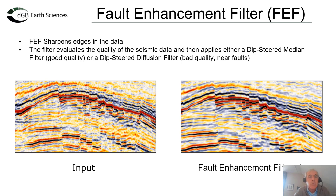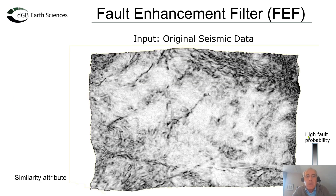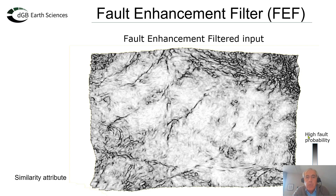The composition is that we apply the dipsteered median filter in areas of good quality, and in areas of bad quality — that is near faults — we apply the dipsteered diffusion filter. So there's a cutoff defined by the user. On the left we see the input, on the right the fault enhanced filter, and please notice the sharpened fault positions — sharpened edges. This of course has also an impact on attribute analysis; just one example of what pre-processing of the data can do.